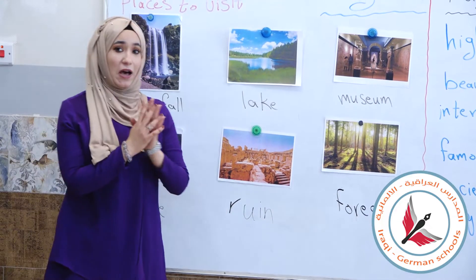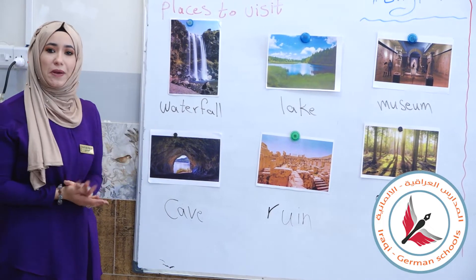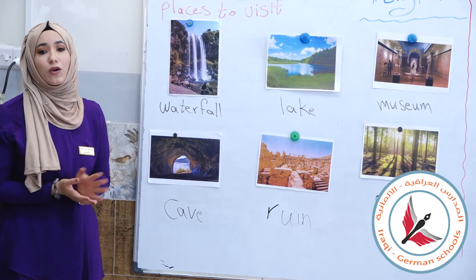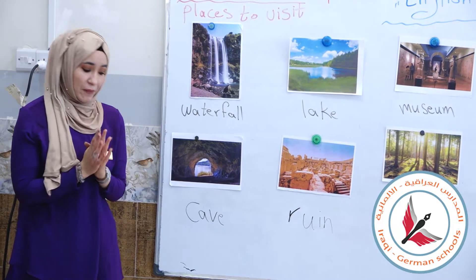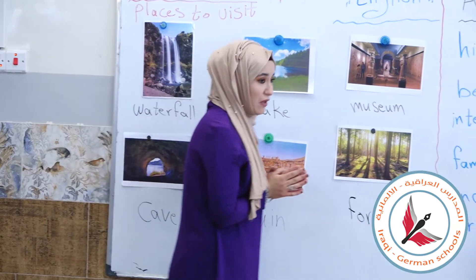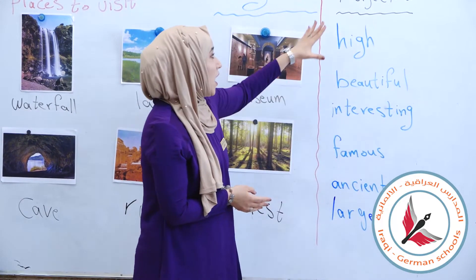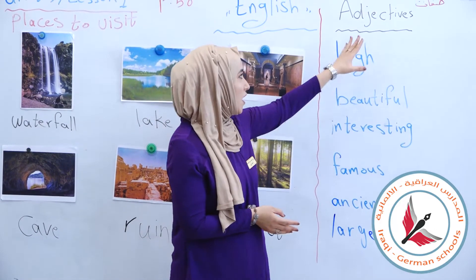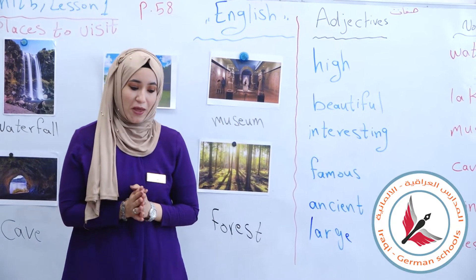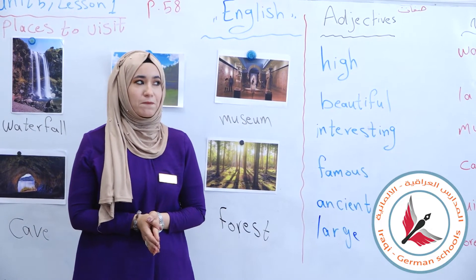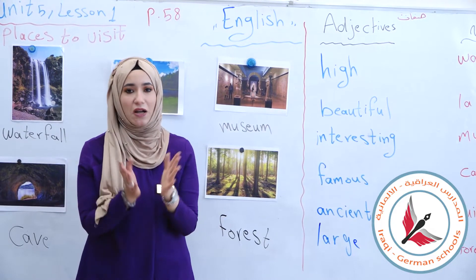Now we've learned these places. These places are called nouns — they are names. Now we will learn about something new: adjectives. We took nouns before, but adjectives — what do adjectives mean? Adjective means صفة — a description. It is used to describe something.